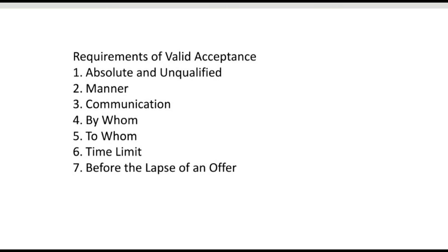Fifth, acceptance should be communicated to the person to whom the offer is made — the offeree. If the offer is not communicated to an authorized person, there will be no legal contract. Sixth, time limit: acceptance should be given within a prescribed or reasonable time depending on the facts and conditions of the case. For example, X offered to sell his shares in June, but acceptance was communicated in November — it was held the offer was not bound by the acceptance as it was not given in the specified time.